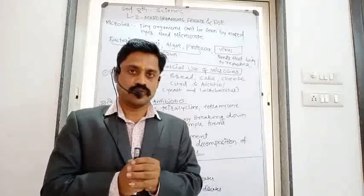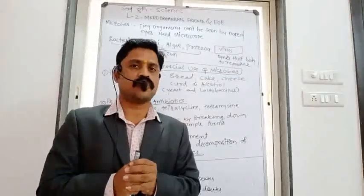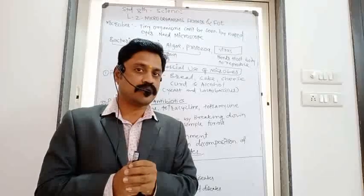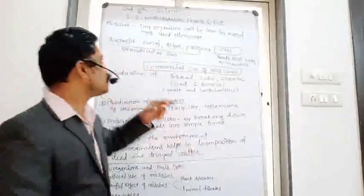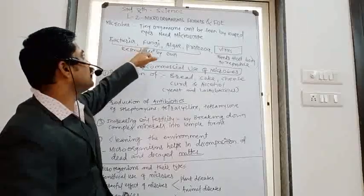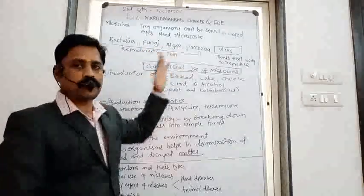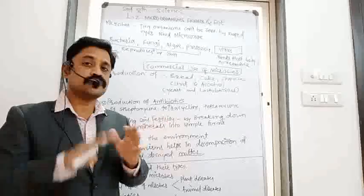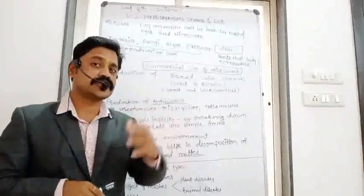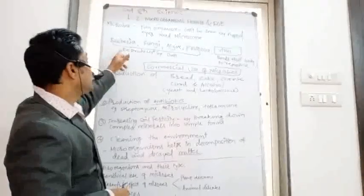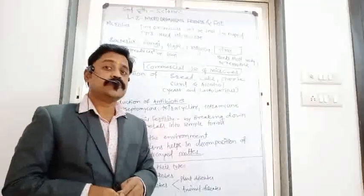Microorganisms are classified into four types: number one is bacteria, number two is fungi, number three is algae, and number four is protozoa. So these are the four types of microorganisms — bacteria, fungi, algae, and protozoa.